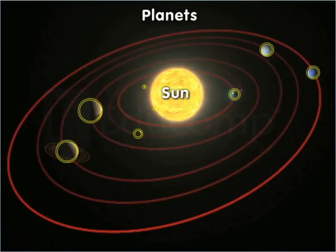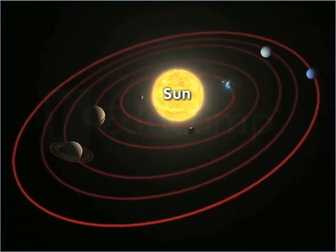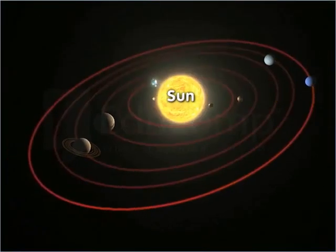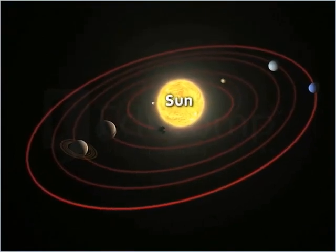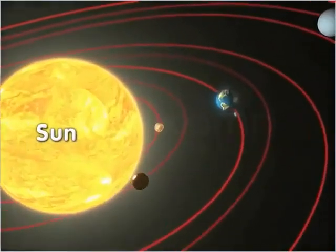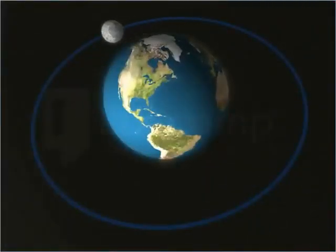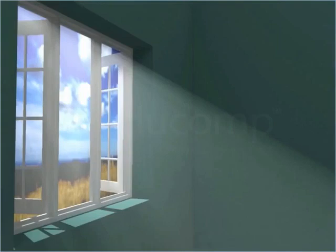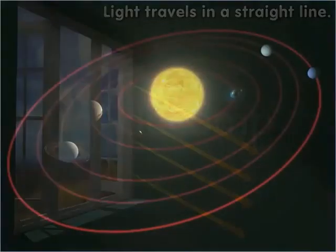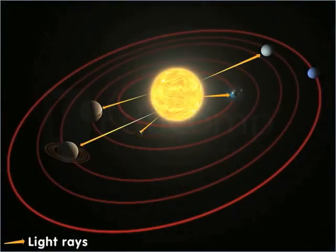All planets, including the Earth, revolve around the Sun in a fixed orbit. Also, the Moon revolves around the Earth. Furthermore, you may know that light travels in a straight line, so sunlight falls on all planets in a straight line.